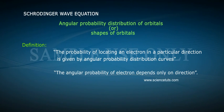Angular probability distribution of orbital or shapes of orbitals. Definition: The probability of locating an electron in a particular direction is given by angular probability distribution curves. The angular probability of electron depends only on direction.